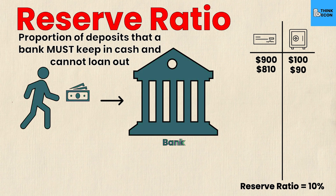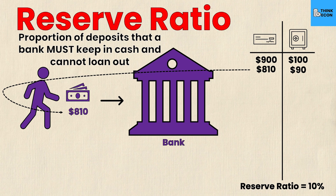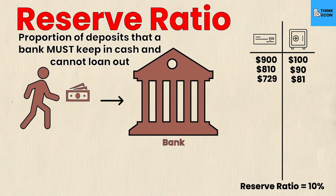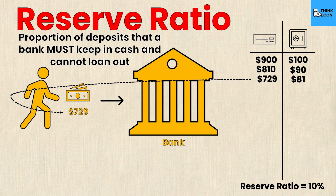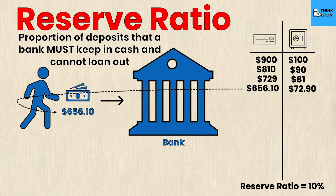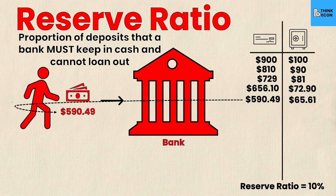This process continues: someone comes in with $810, $81 goes in the vault and $729 gets loaned out. Then $729 comes back to a bank where $72.90 goes to cash reserves and $656.10 is available as loanable funds. Next, $65.61 goes into the vault and $590.49 is loaned out, and the process continues again.